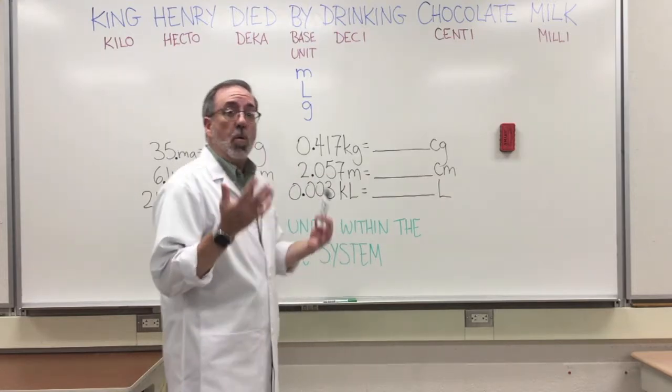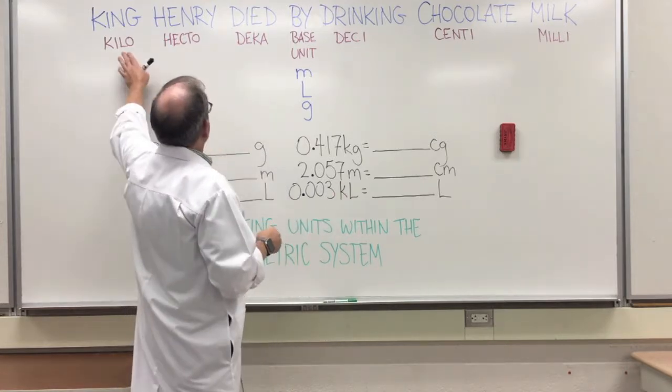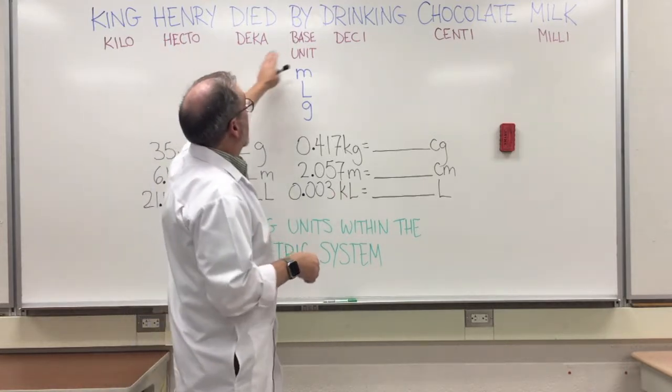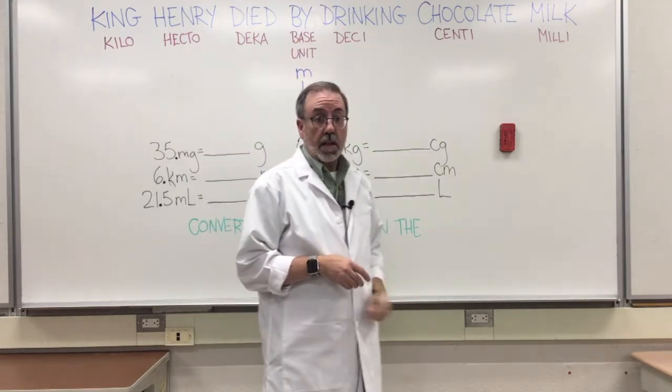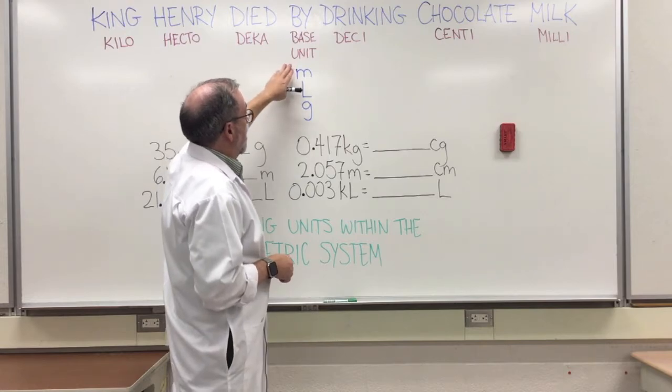In this case we're trying to remember the metric system in order. So starting with kilo and then going to hecto, deca, the base unit, deci, centi, and milli.